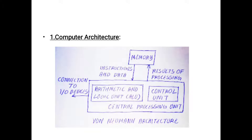Instructions and data are piped from memory to the arithmetic and logical unit. From memory, we give instructions to the CPU. Those instructions are executed, and after running the program we get some output. The result of processing goes back to memory. We give input, run the program, and get the output. This is the main computer architecture flow.